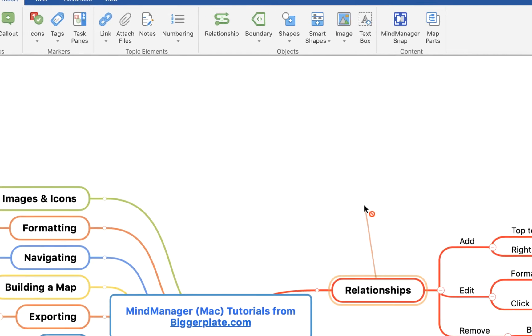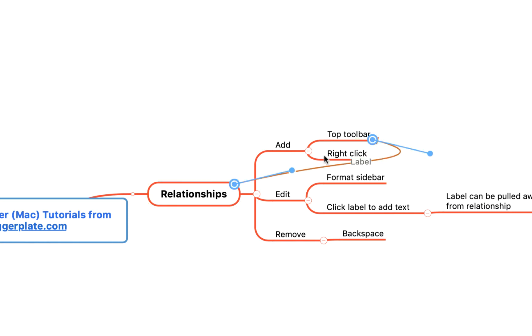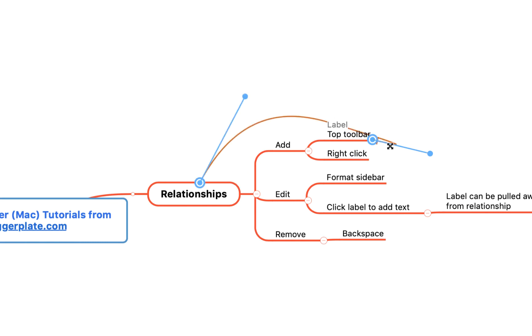If I click that, I get this line pop out that I can then connect to another topic within my map. If I now click on the topic I wish to connect to, you'll see the relationship line appears, and I can then use these little antenna to adjust the positioning and the shape of the line.